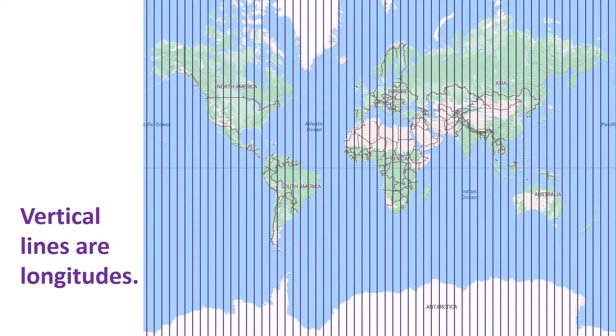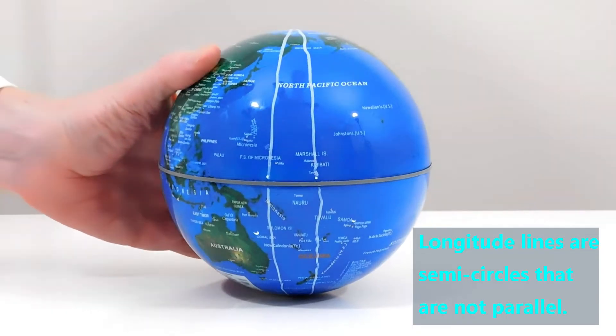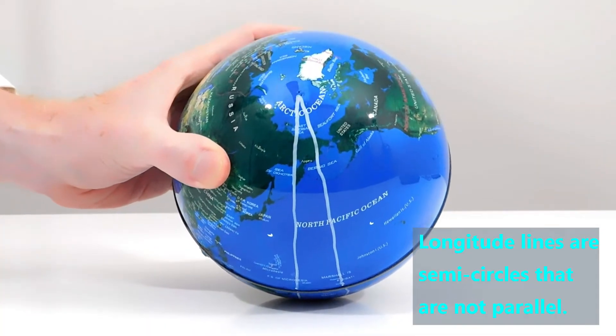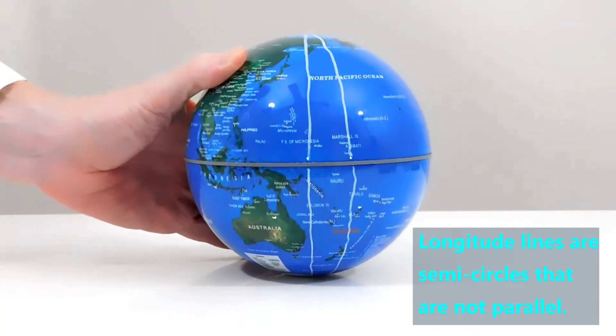Even though it may seem like they are parallel on paper maps, all of the lines of longitude meet at the North Pole and at the South Pole, so they're not parallel. This is another difference than the parallel circles of latitude.